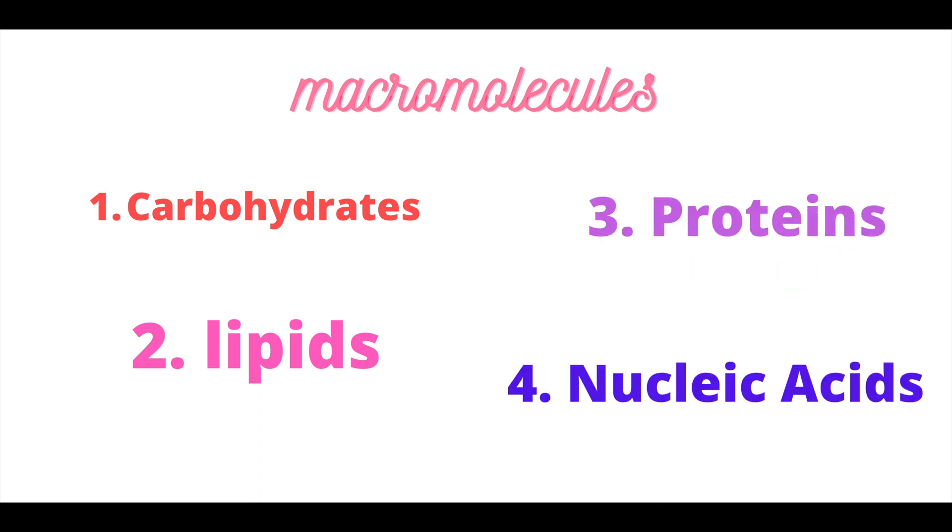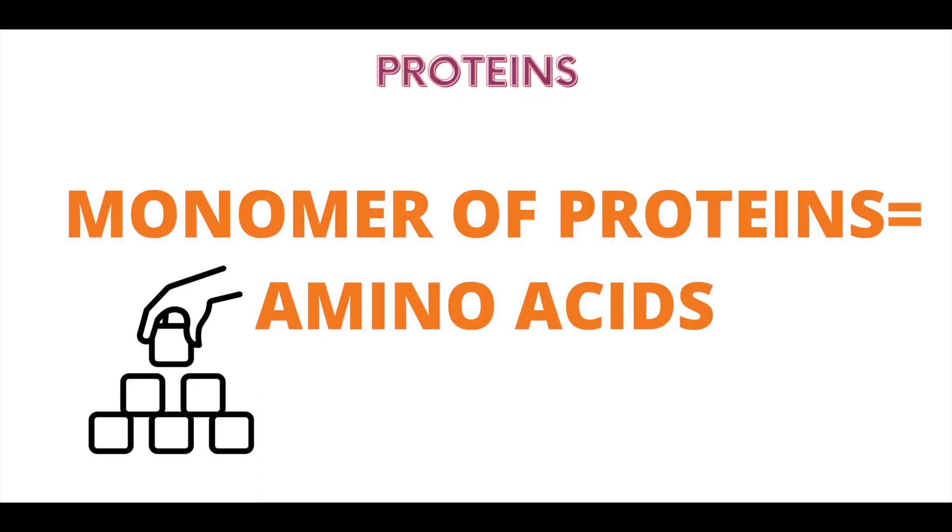As with carbohydrates and lipids, we'll cover what proteins are made of, their structure, and their contributions to our body. First, remember that monomers refer to the building blocks of macromolecules—smaller molecules that make up bigger molecules. The specific monomers of proteins are called amino acids.